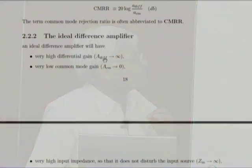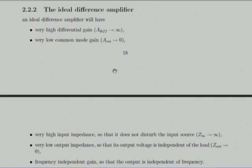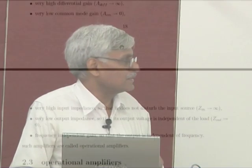The ideal difference amplifier will have the differential gain as high as possible and common mode gain equal to 0 — it will suppress the common mode completely. You define the difference of the two voltages as V_i differential and the average of the two as input common mode. The output voltage equals a differential gain times V_diff plus a common mode gain times V_cm. For an ideal difference amplifier, A_cm is 0 and V_out equals A_diff times V_diff. In real life it is not possible to reduce the common mode gain to exactly 0, and you measure how close to ideal you are by defining the common mode rejection ratio, CMRR.